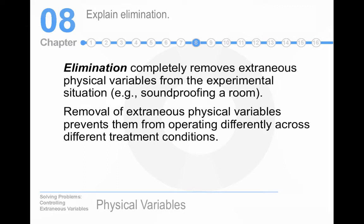Elimination removes extraneous variables by getting rid of them. For example, I had a colleague who had sunlight coming into their lab, getting different amounts of light during the day or night. Since they were doing perceptual research, this affected participants' ability to do the task. They ended up taping the windows over with aluminum foil and putting blackout curtains up, which eliminated the problem — hence the term elimination.